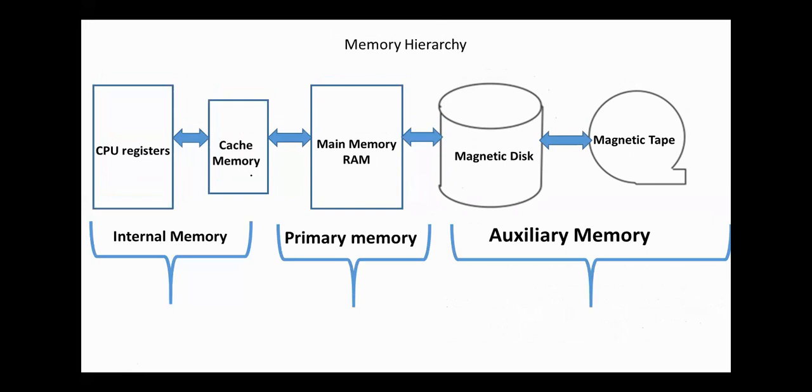CPU registers and cache memory are usually called internal memory. RAM is the main memory or the primary memory. Magnetic disks and magnetic tapes are known as auxiliary memory.